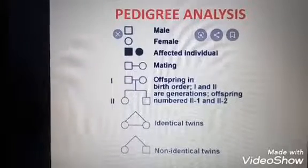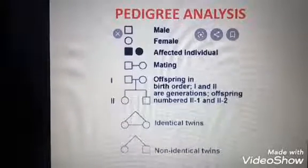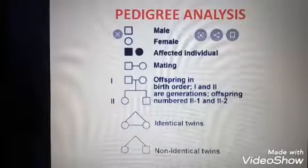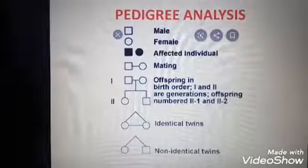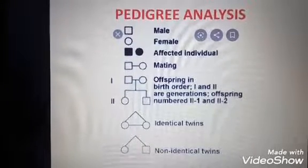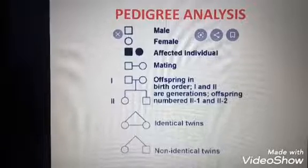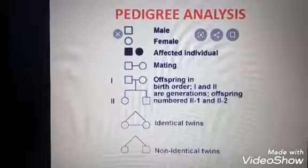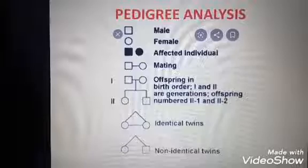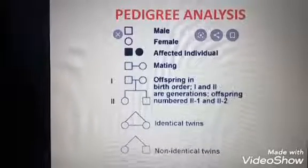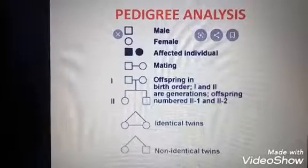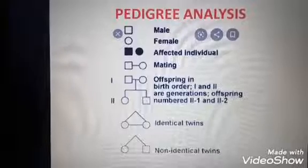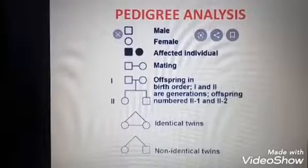It is not possible to perform the process to analyze inheritance patterns of traits in humans directly. So for this, we have to study the family history of the organism or particular trait. Suppose a disease or condition is occurring in a family — we can analyze it easily through pedigree analysis. Pedigree analysis is based upon some characters.